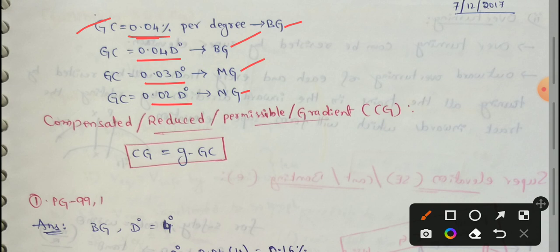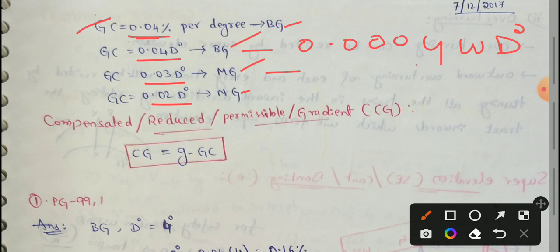The curve resistance formulas are: for broad gauge, RC = 0.0004 × W × D degrees; for meter gauge, RC = 0.0003 × W × D degrees; for narrow gauge, RC = 0.0002 × W × D degrees.